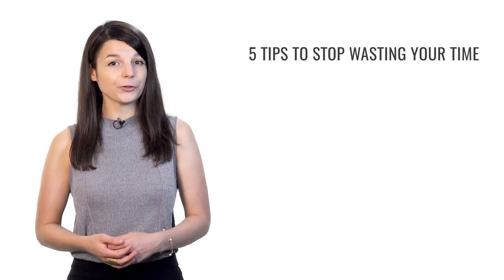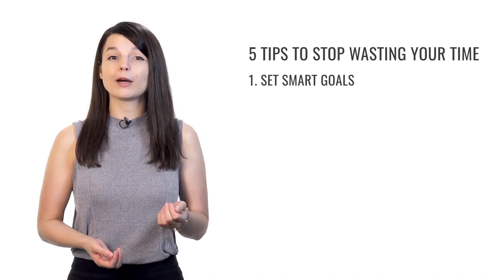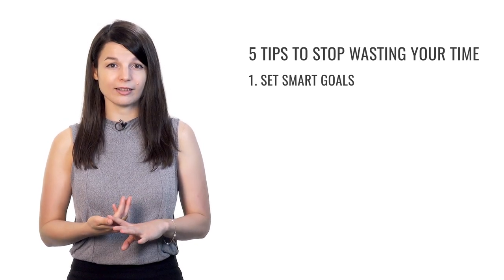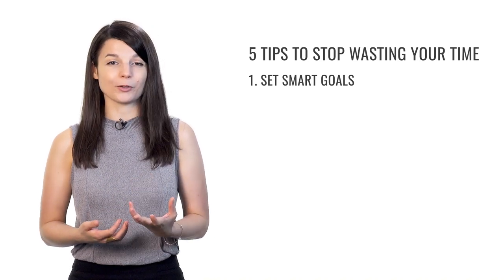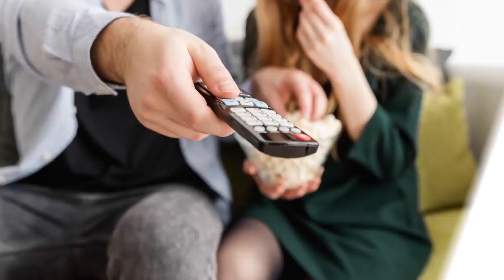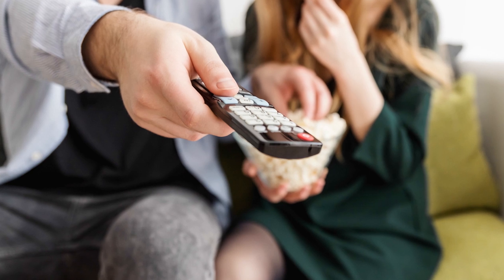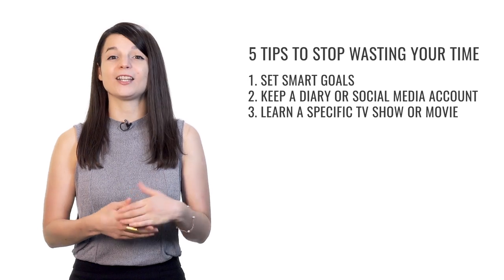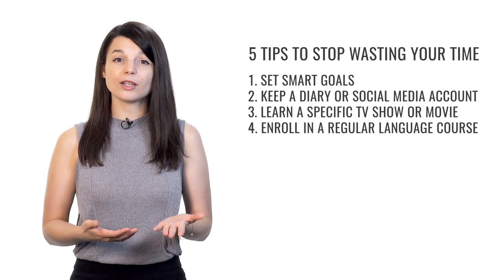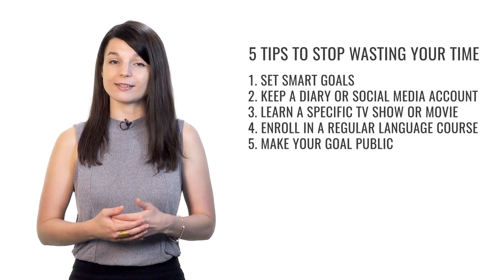That brings us to the end of our five tips to stop wasting time and start learning a language. First, create SMART goals — specific, measurable, achievable, relevant, and timely. Registering for a test is a great example. Next, keep a diary or social media account in your target language, even if you're still a beginner. Then, focus on understanding a specific TV show or movie you really love. Next, enroll in a regular language course for a concrete, recurring commitment. Finally, make your goal public — tell someone to keep you accountable. You're much less likely to abandon your studies if you have friends asking about your progress.